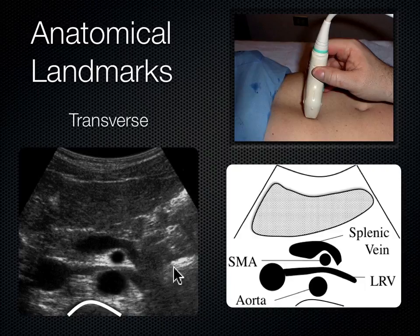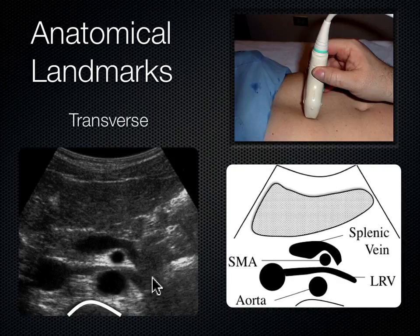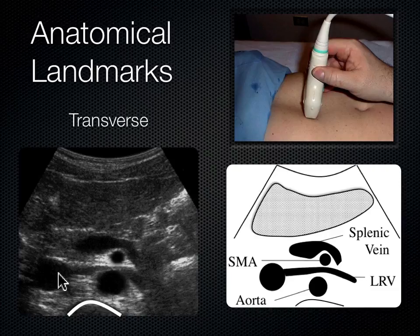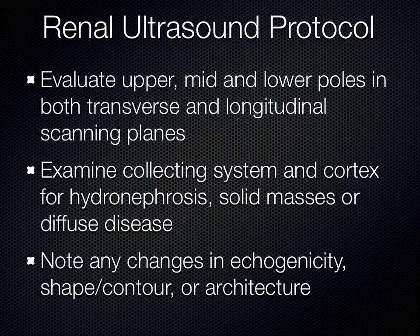The left kidney is off-screen to the left side of the body. Analogous to how the right renal artery had to go behind the IVC to reach the right kidney, the left renal vein has to cross over to the right side of the body to drain into the IVC — hence why it gets nutcracked between the aorta and SMA.